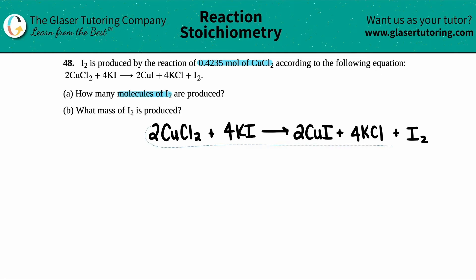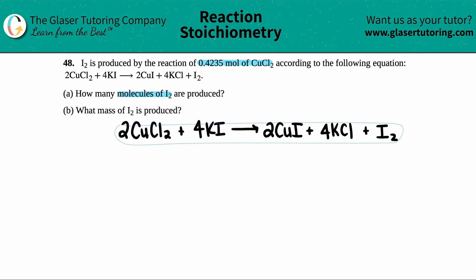Okay, now the first thing that I notice is that there's already coefficients in the front of some of the compounds. So there's like a 2 in front of here, there's 4 KI's, there's 2 CuI's, there's 4, and then there's no coefficient here, but that secretly means that there's a 1, right? So I already know that this is balanced. Thank goodness.